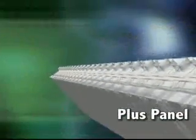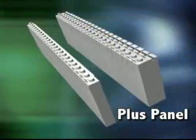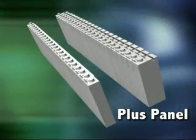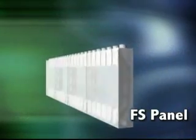The Quad-Lock Plus panel was developed for walls requiring higher insulation values. Dimensions for these panels are the same as regular panels with the exception of the width, which is 4.25 inches thick.